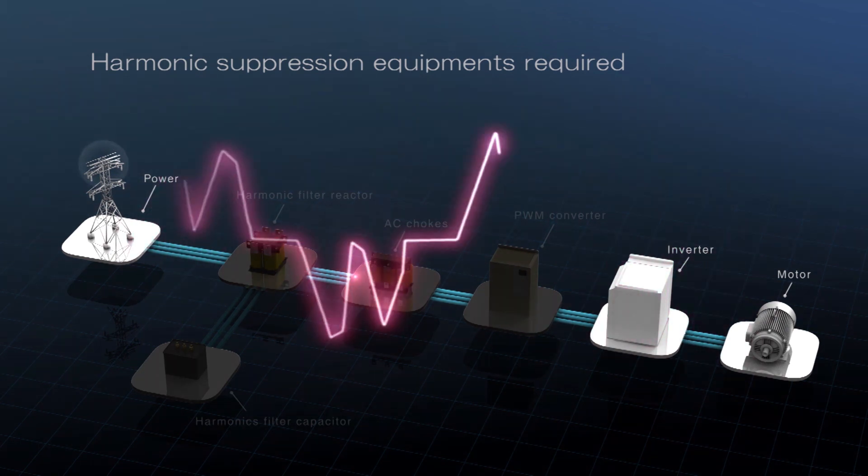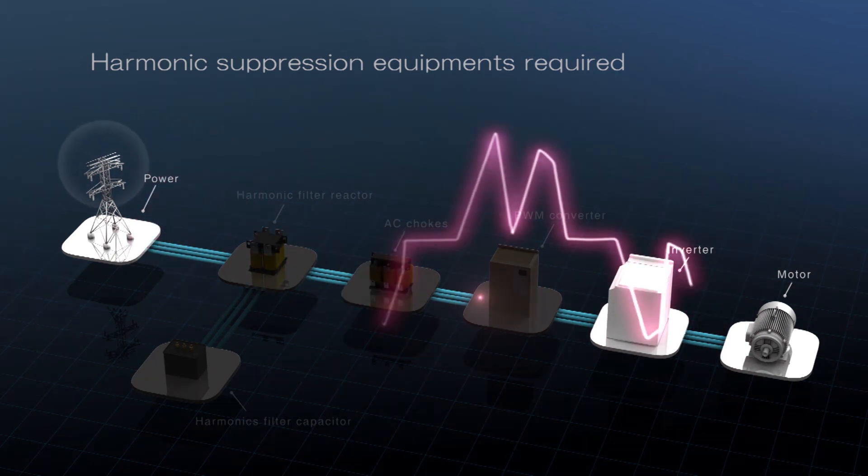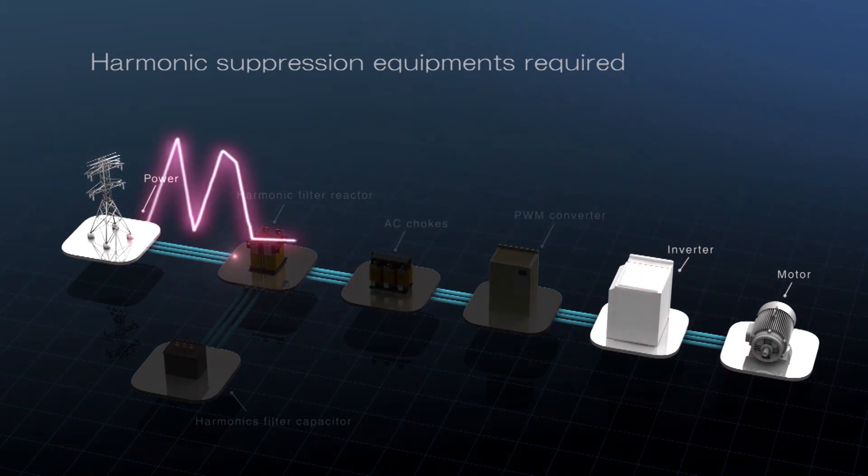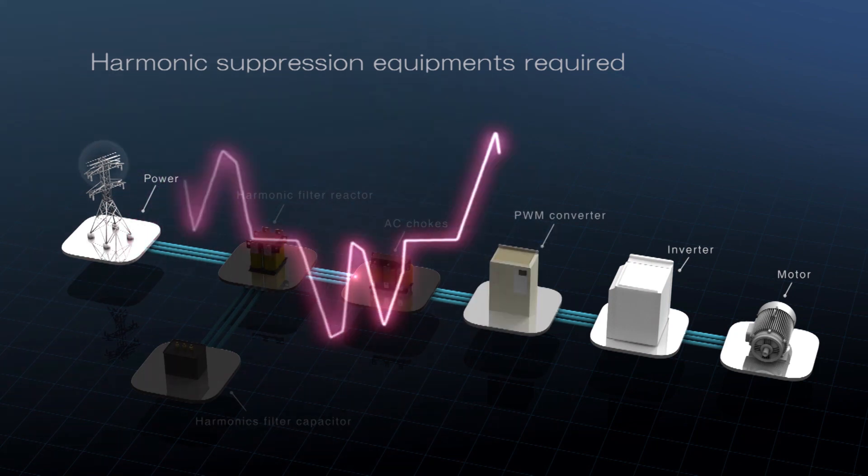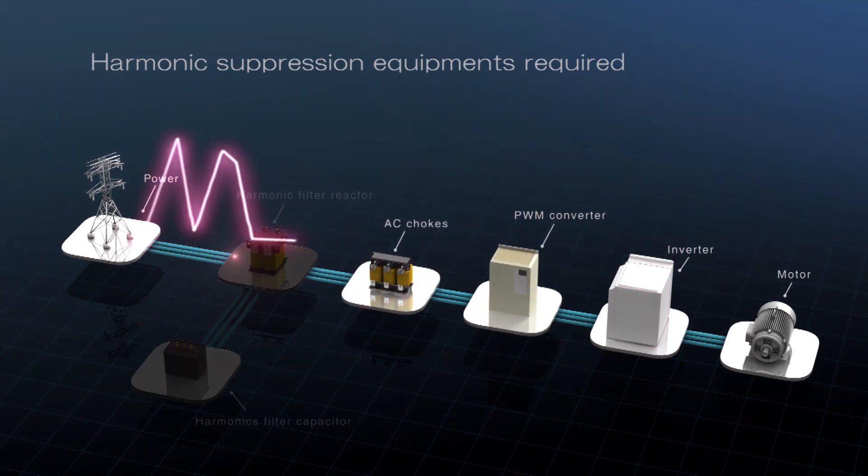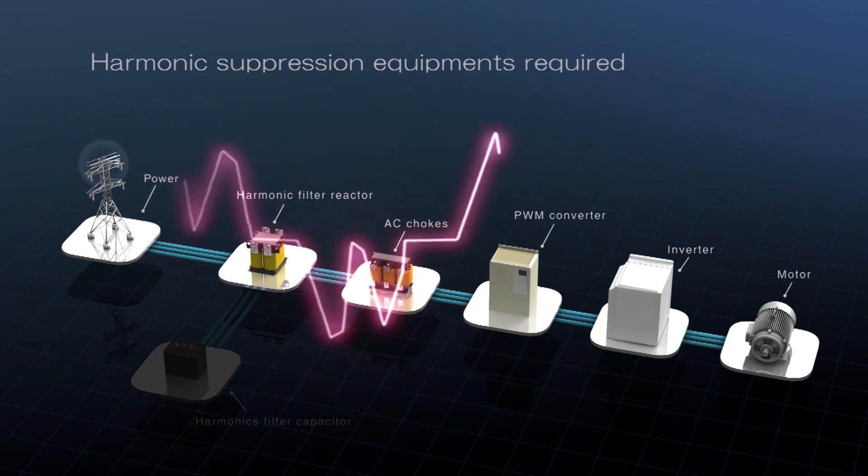Historically, solving the problem of harmonic distortion and regenerative energy has required the addition of extra components such as PWM converters, AC chokes, harmonics filters, and capacitors.